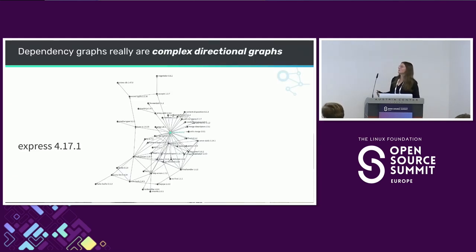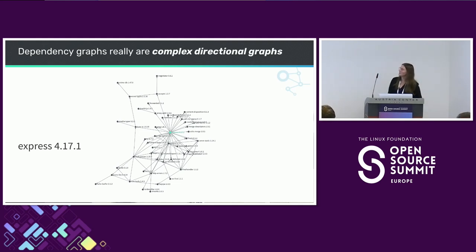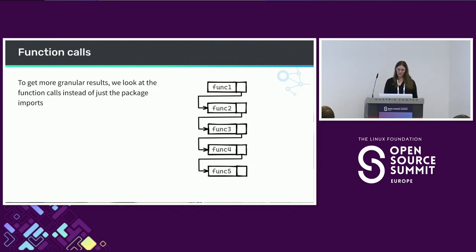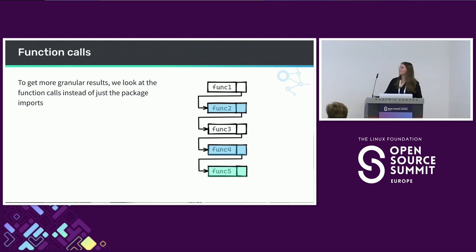Dependency graphs are complex directed graphs and we have a lot of tools to analyze them. We use call graph analysis to identify when a capability is accessible from a given package. In particular we look at function-level calls, not just package-level ones. If you just look at which packages are imported, that's far too broad and gives you too many false positives, because you don't use every function in all of your dependencies. So we look at the function-level call graph to identify what code is accessible from your package.